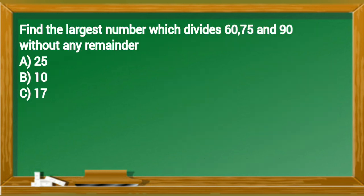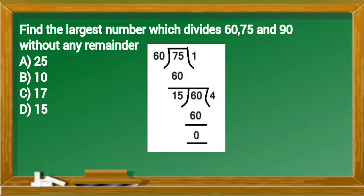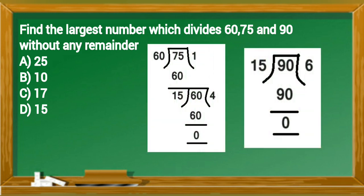Find the largest number which divides 60, 75 and 90 without any remainder. Let's solve this by division method. So, HCF of 60, 75 and 90 is 15. And option D is correct answer.